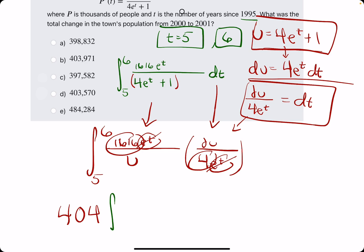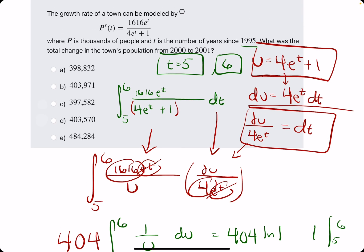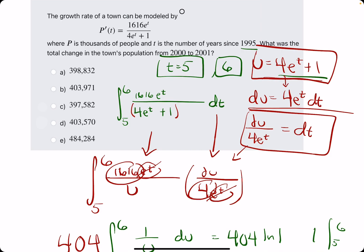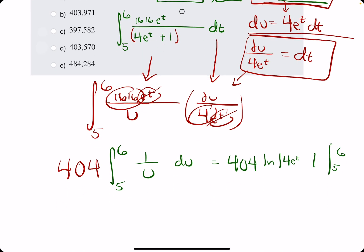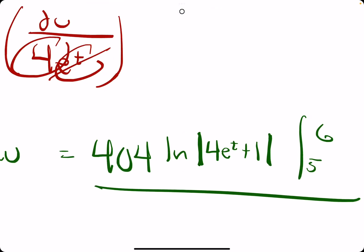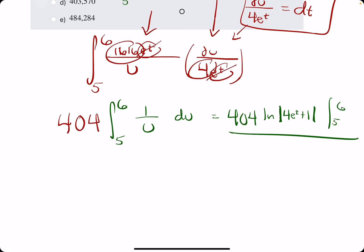All right. So 404 is our outer coefficient. From 5 to 6. And it looks like we have just 1 over U. Again, 404 ln of absolute value of U from 5 to 6. And so instead of ln of U, we have ln of 4E to the T plus 1. And then we sub whatever U is equal to back in. So now we're evaluating this from 5 to 6. Plugging in 6 first, then 5. So let's just do that all in Desmos.